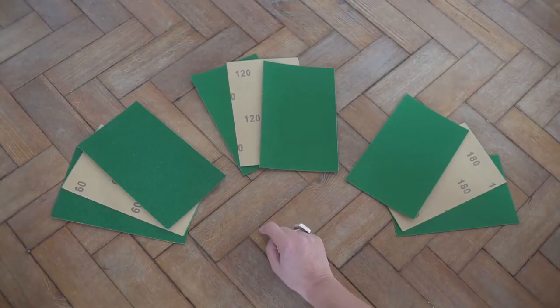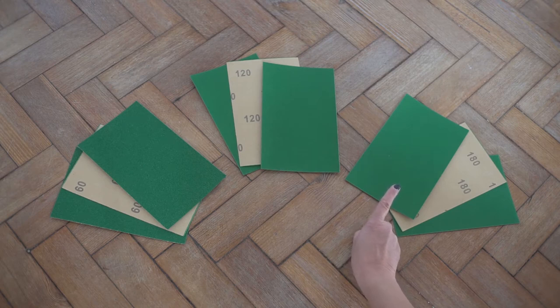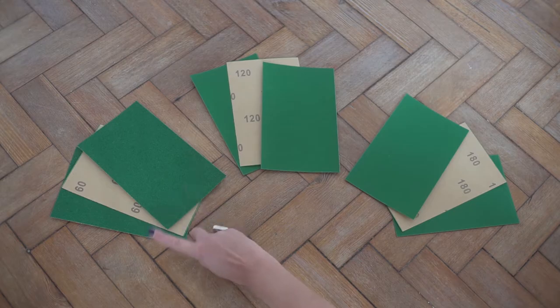a medium grit sheet of sandpaper, say 120 grit. Too fine and it will clog up with filler too quickly, or too rough and it will make marks on the wall.